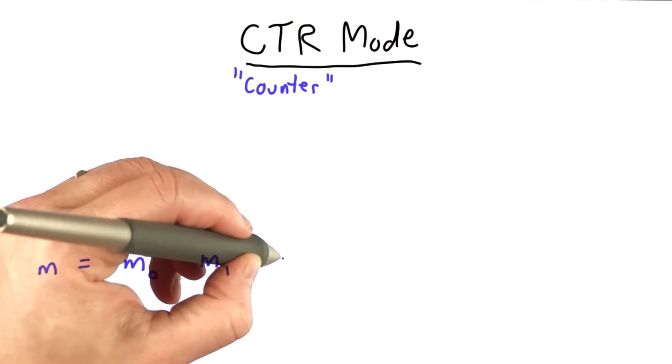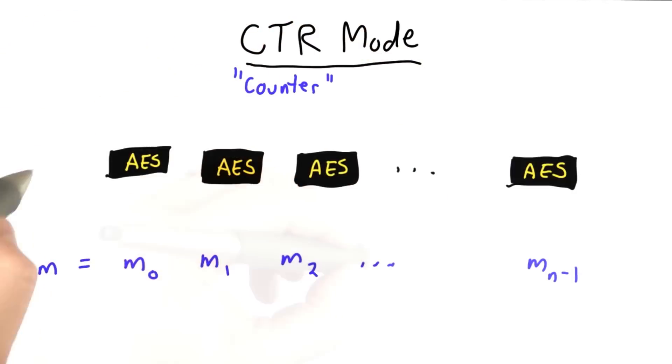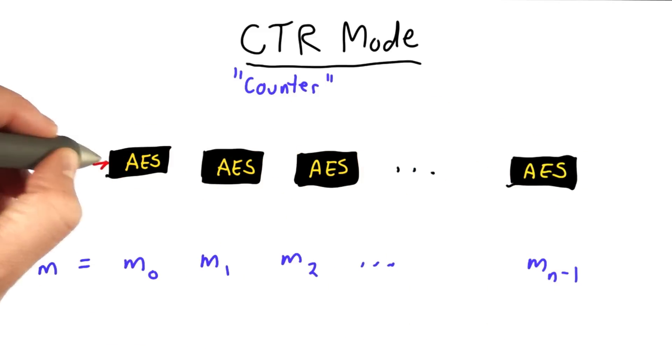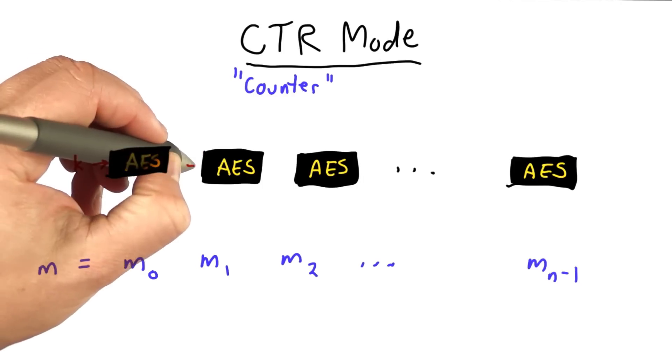We have a message divided into blocks, just as before. We'll have our encryption function, just as before, and we can think of it as AES or any other block cipher. That takes a key as input, and we'll use the same key.